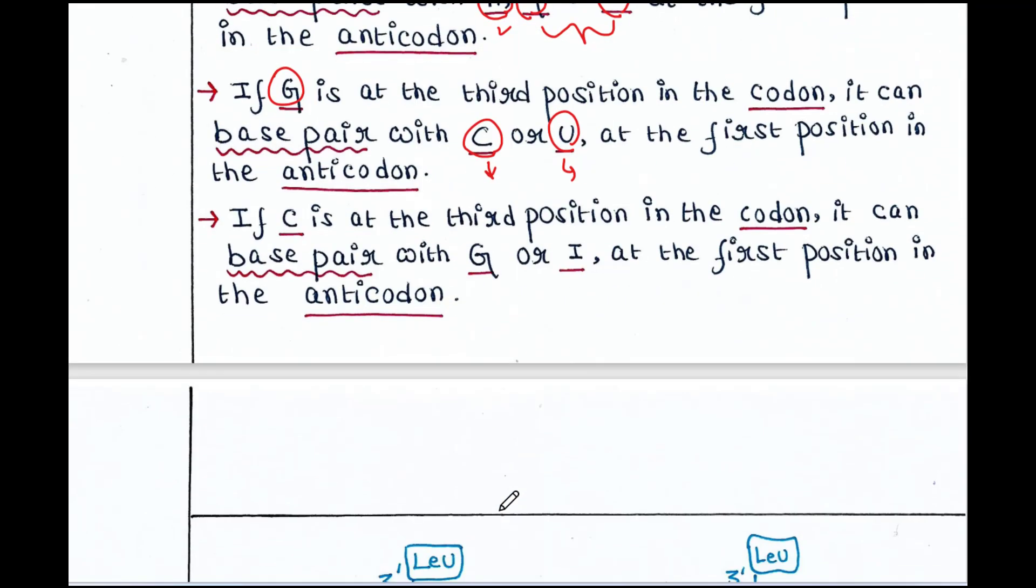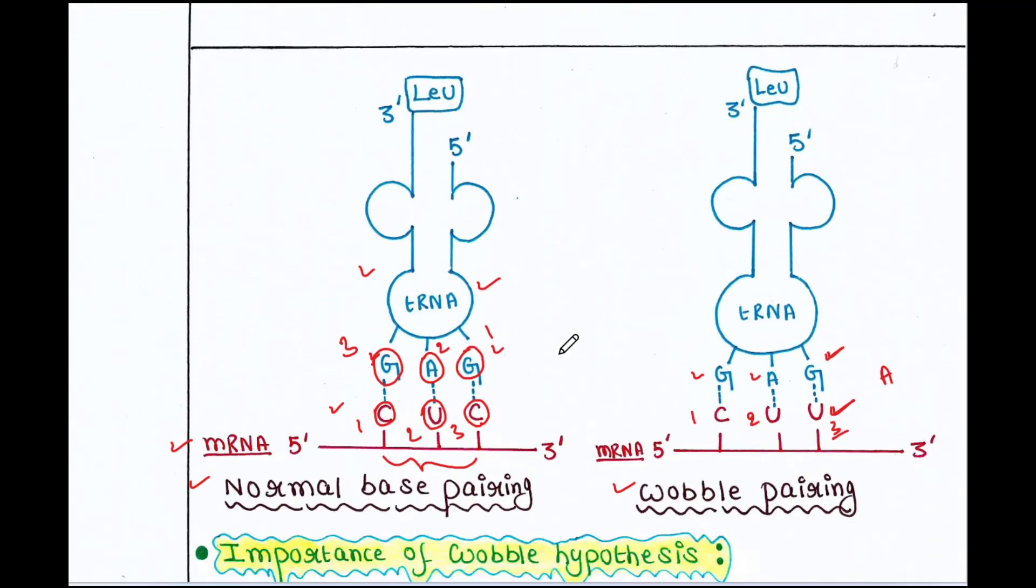Now, if C is at the third position in the codon, it can base pair with G or I at the first position in the anticodon. So, C pairs with G. This is usual base pairing. But C pairs with I. That is unusual base pairing. That means the wobble base pairing.